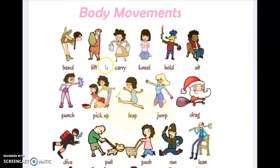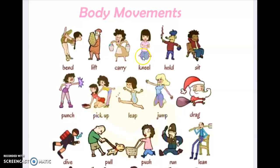So these are some of the body movements. This is a picture of Ben — she is bending, when you bend you move your head down. Lift is when you pick up something and hold it and carry it. Kneel is like when you pray, you put your knee on the floor. Holding something — this one is when you sit. Punch — you pick up something. Leap is similar to when you're jumping. Jump.